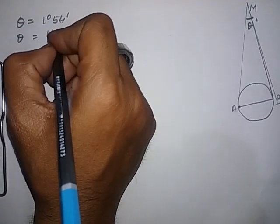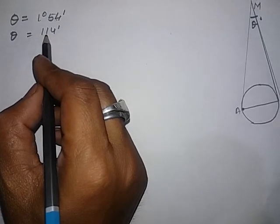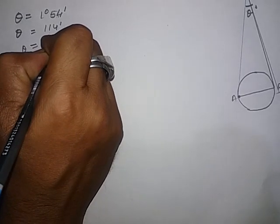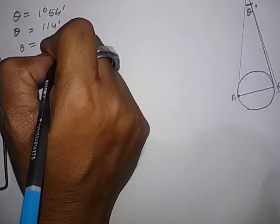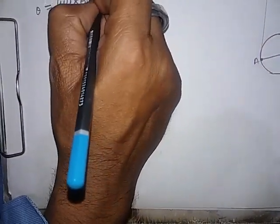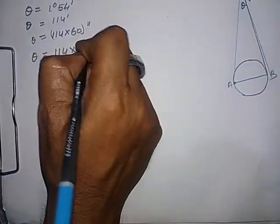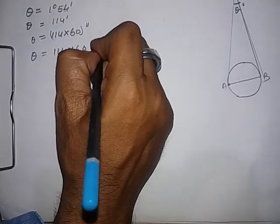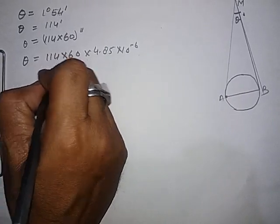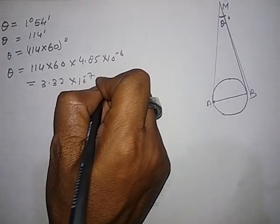Now, if you know the formula, directly convert minute into radian or you can convert it into second. 114 into 60 seconds. This is the theta in seconds. Now in radians, theta equal to 114 × 60 × 4.85 × 10^-6. And this equal to 3.32 × 10^-2 radians.